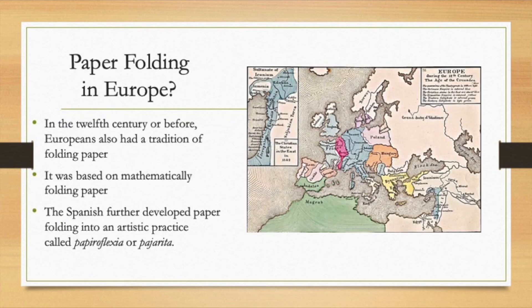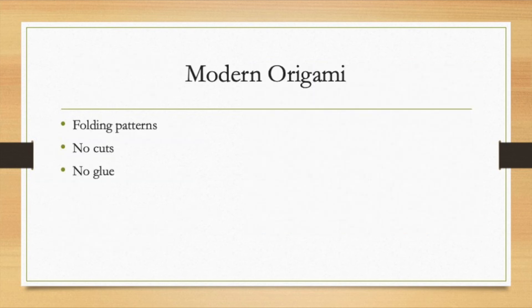In Europe there was also a lot of traditions of paper folding that date back to the 12th century or possibly even before. The Moors brought a tradition of mathematically based folding to Spain and the Spanish people further developed paper folding into an artistic practice. So modern origami often prioritizes more of a puzzle aspect to the folding and the challenge of folding a single square of paper without using cuts or glue.